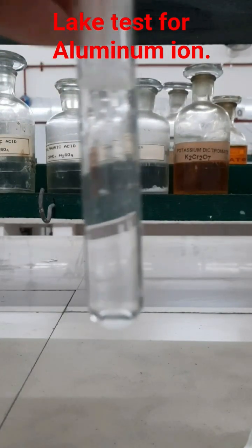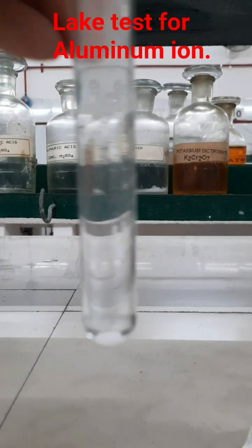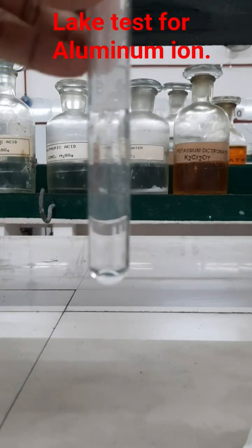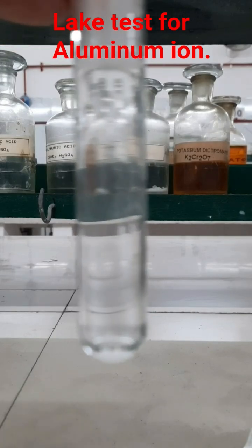Then you have to add a few drops of blue litmus solution into it. The color of the blue litmus solution will turn red since the medium is acidic due to the addition of dilute HCl for dissolving the precipitate.